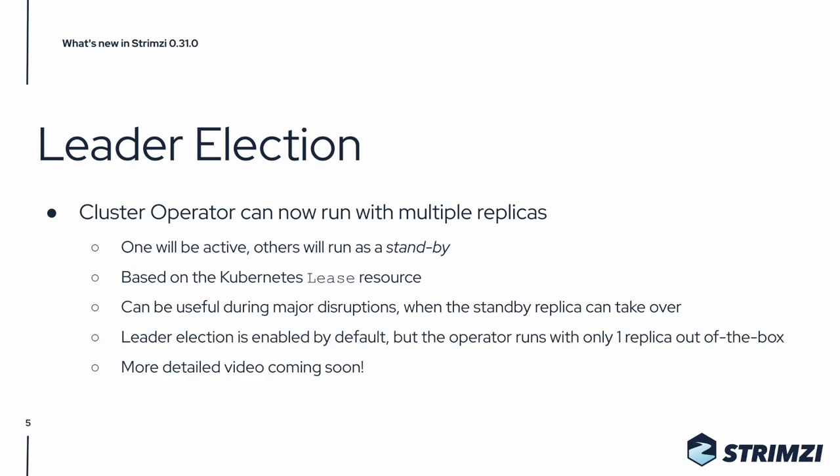The leader election support is based on the Kubernetes lease resource. Running the operator with multiple replicas can be especially useful during major disruptions where your cluster operator pod might not be schedulable. Leader election is enabled by default, but the operator runs out of the box with only one replica, so if you want to use more of them, you have to scale it up. A more detailed video about this feature will be coming soon.